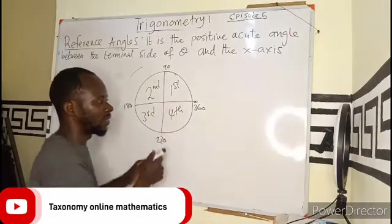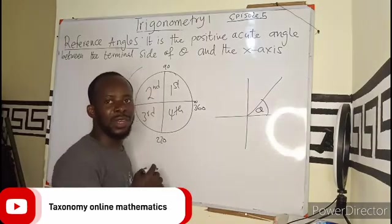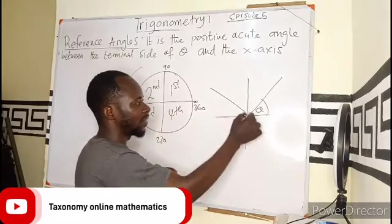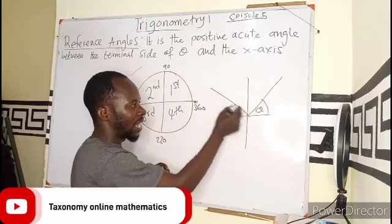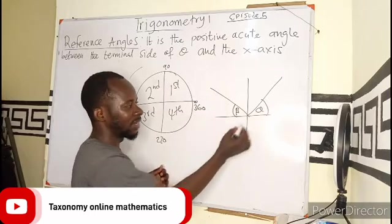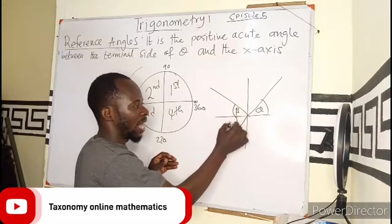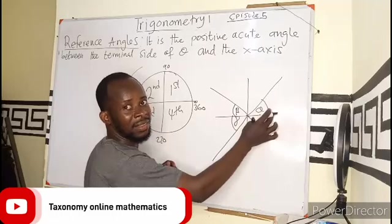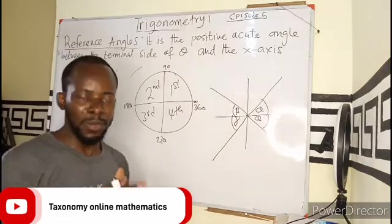If I am in the 1st quadrant and I have an angle theta here, you can see this is my reference angle — the angle formed with the x-axis. If I am in the 2nd quadrant with angle beta, the terminal angle is here and the initial angle is the x-axis. Moving to the 3rd and 4th quadrants, I still have the x-axis, so I can have a reference angle in each case.